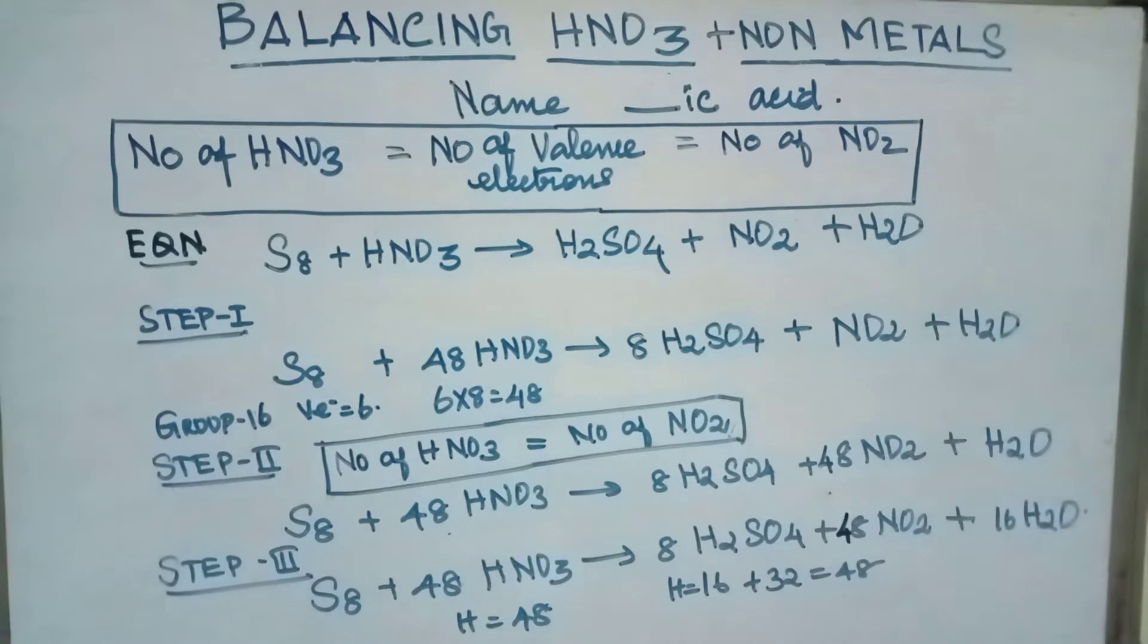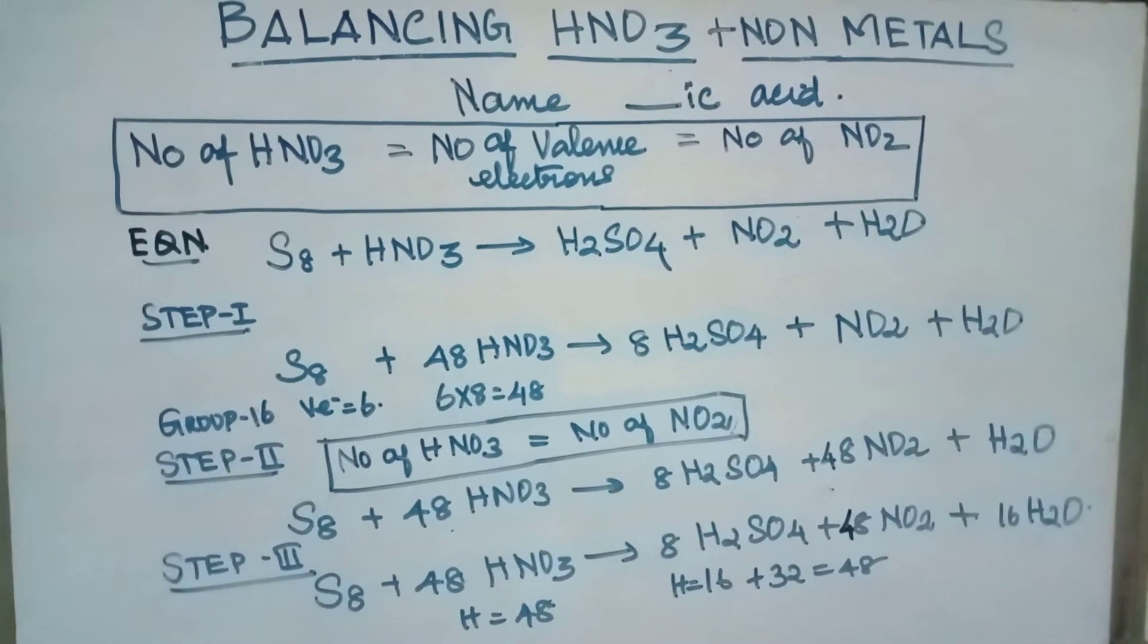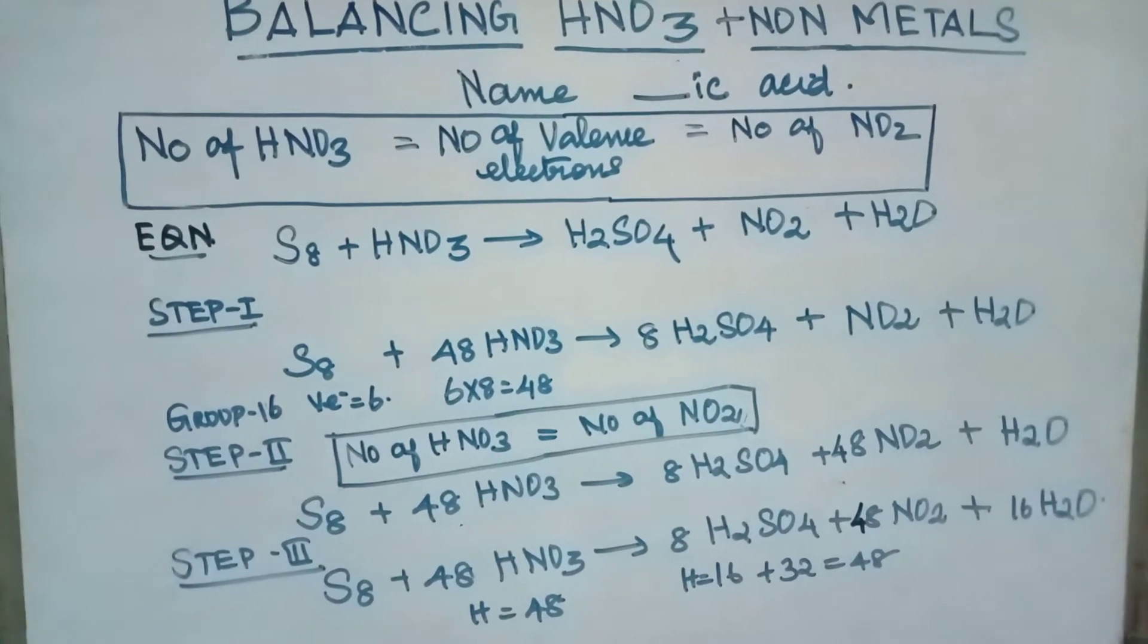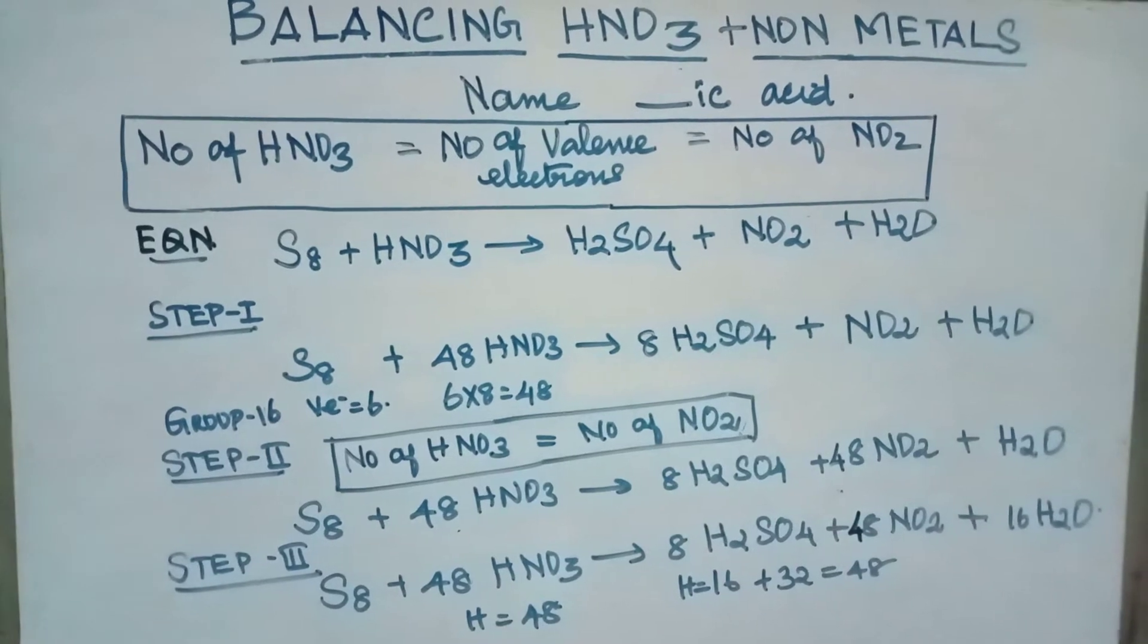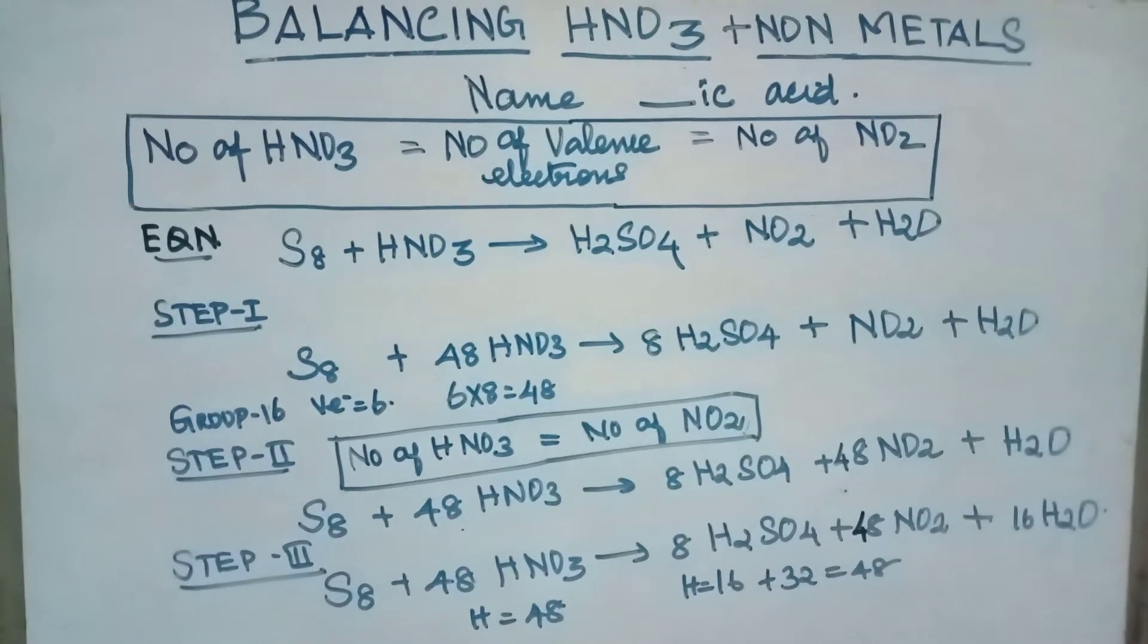If acid is more than sulfur, it will give sulfuric acid with nitric acid. Other rule, number of nitric acid is equal to number of balanced electrons equal to number of nitrogen dioxide.